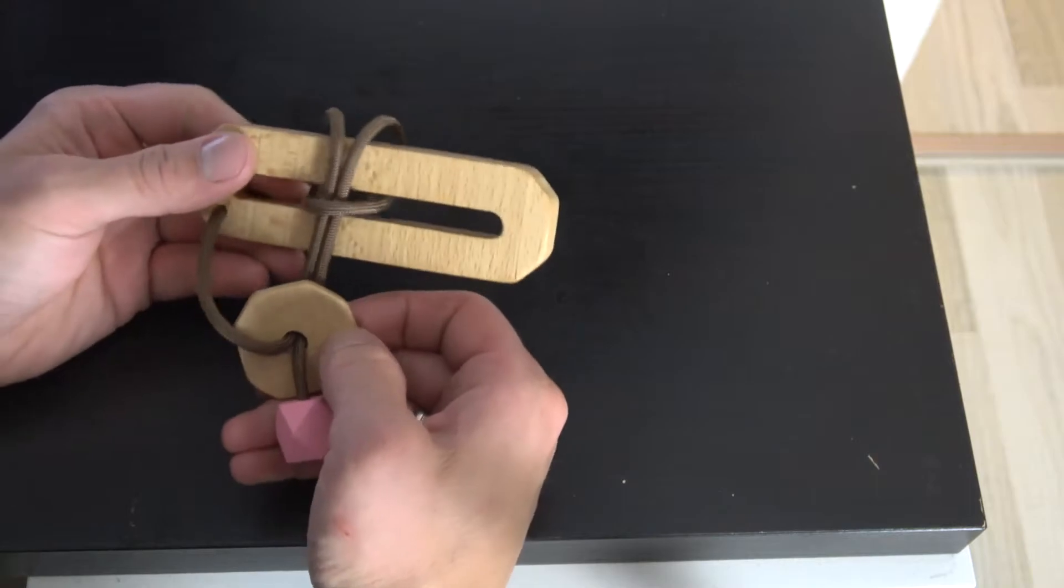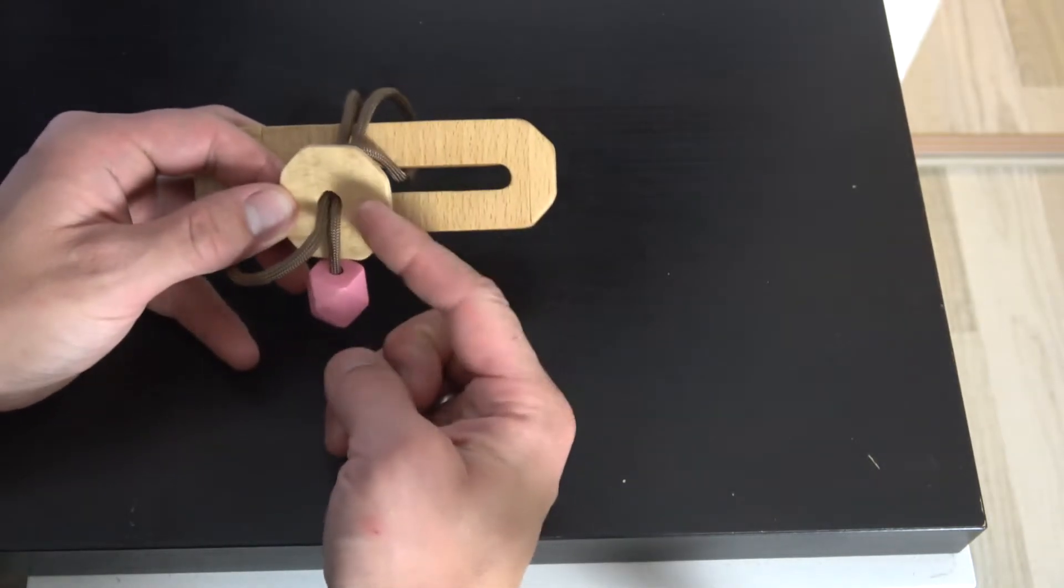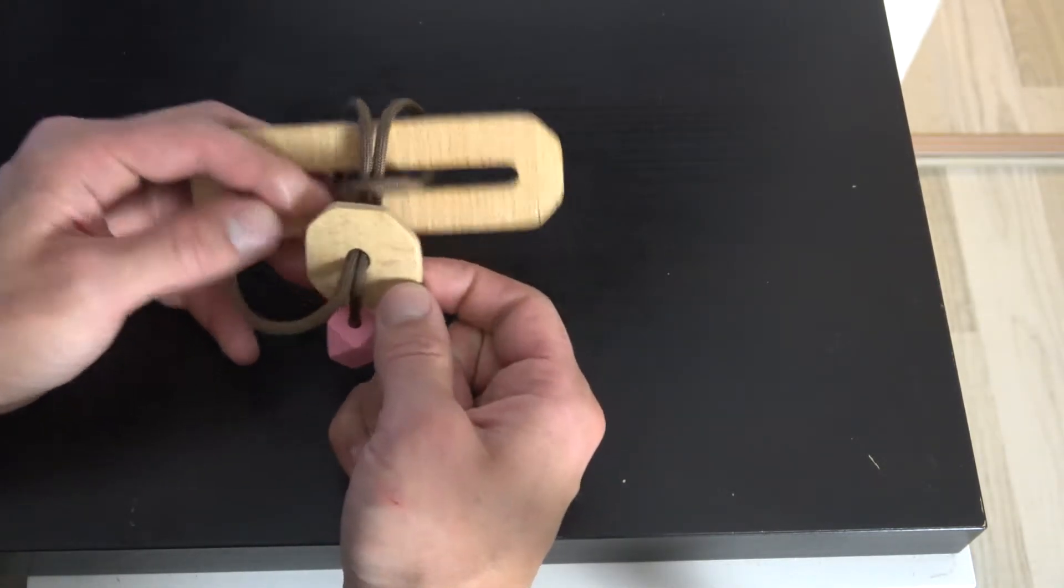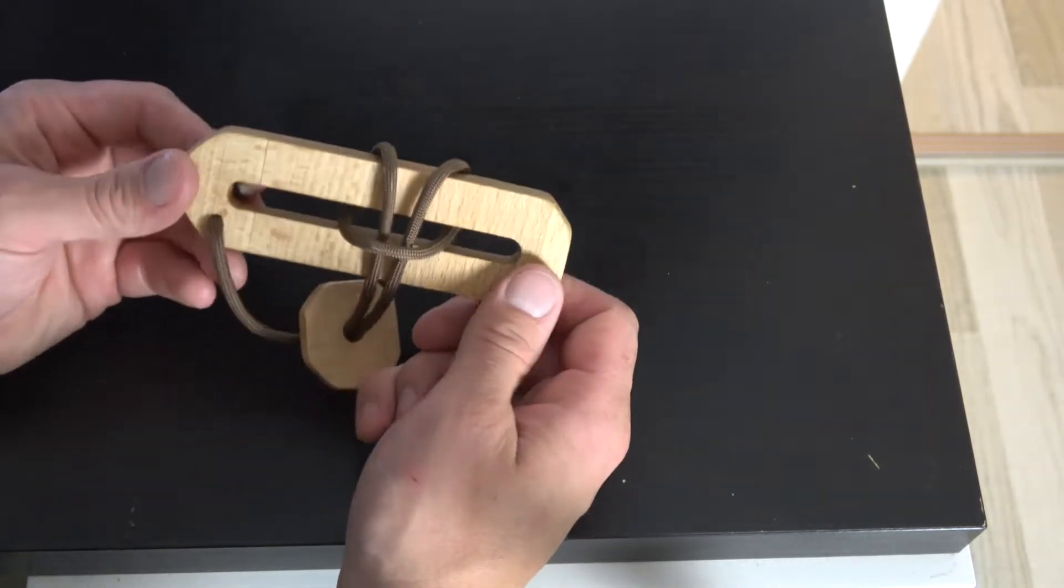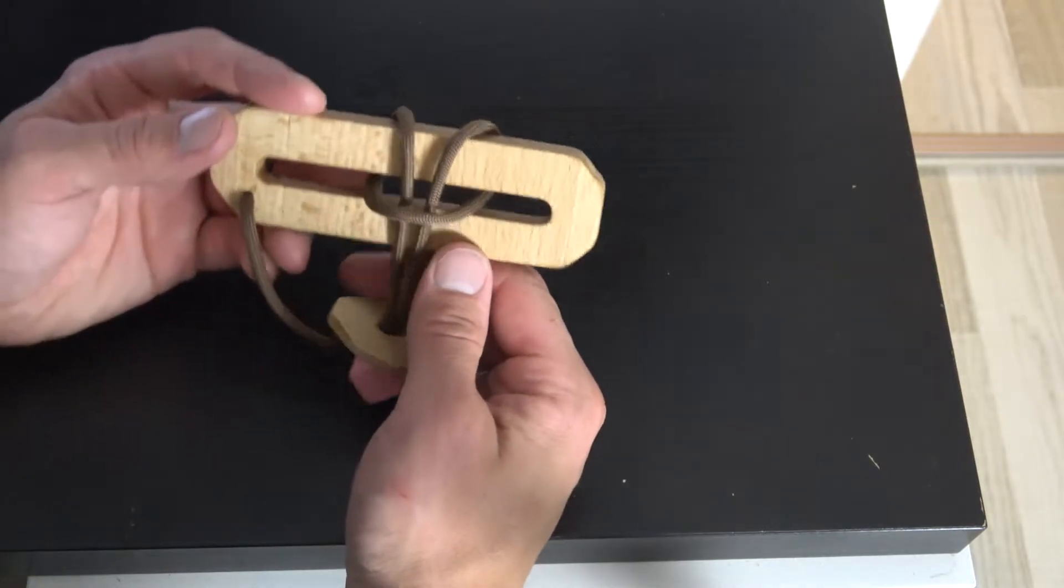Now this is our starting position and the goal of the puzzle is to separate our ring that we got right here, the beech wooden ring, from our wooden loop.